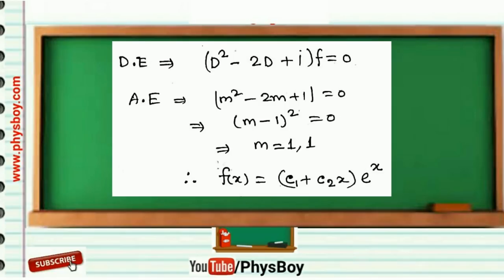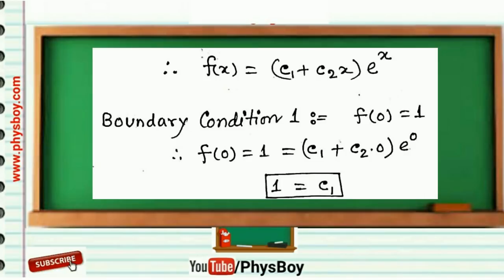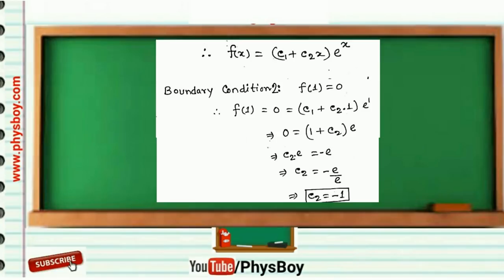So solution is f(x) = (c₁ + c₂x)e^x. You have to find c₁ and c₂ using boundary conditions. From boundary condition 1 you will get c₁ = 1, and from boundary condition 2 you will get c₂ = -1.